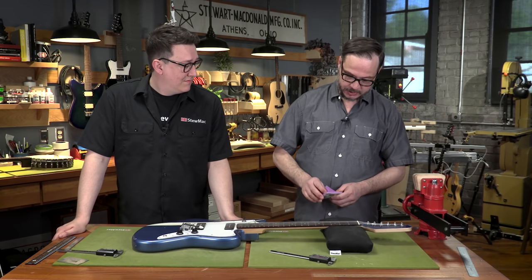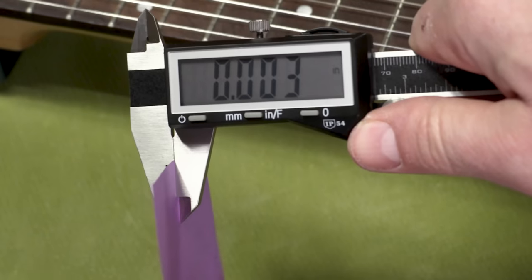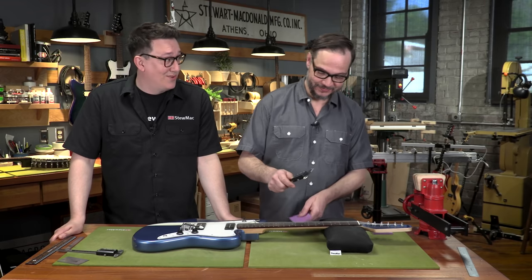To give you an idea, let's measure a sticky note. So a sticky note is exactly three thousandths of an inch thick. So a thousandth of an inch is one third the thickness of a sticky note, and one ten-thousandth of an inch is 30 times thinner than that. Very small. That is precise.